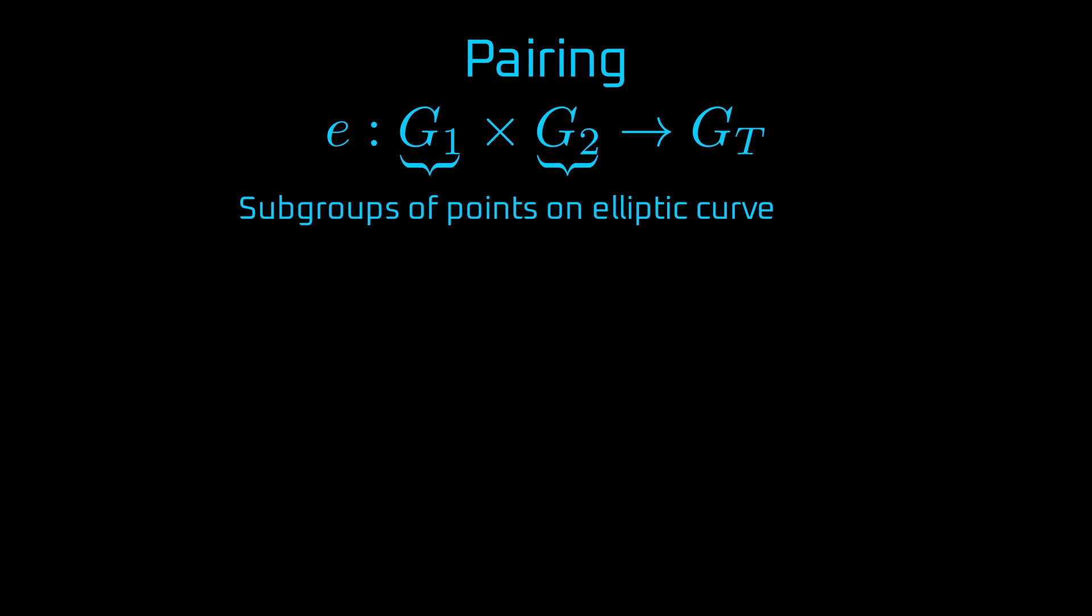How can we be certain that none of the participants were malicious and didn't compromise the security of the setup? To do that we need to learn about pairings, which are a crucial part of zero-knowledge proofs. Pairing in the context of elliptic curve cryptography is a special type of function which takes two points from two different elliptic curve subgroups and returns a field element. The function, also called pairing operator, is usually designated with E. It has three interesting properties.